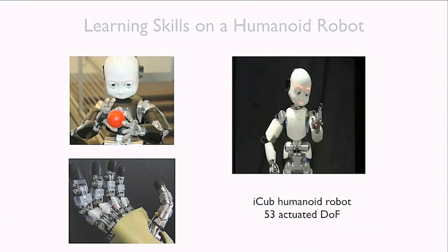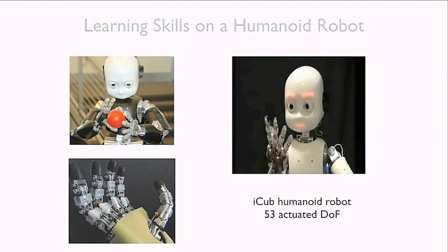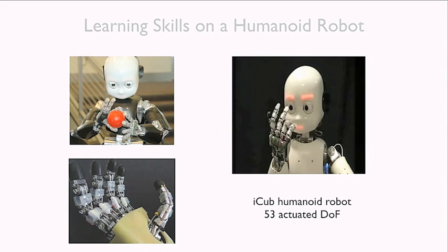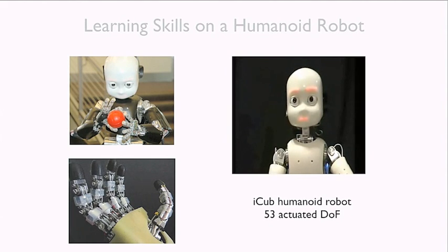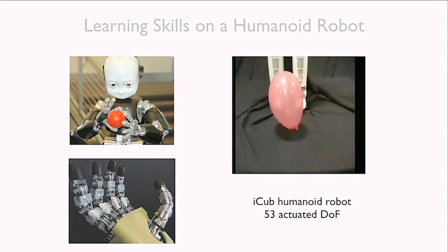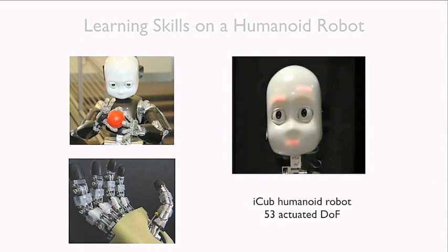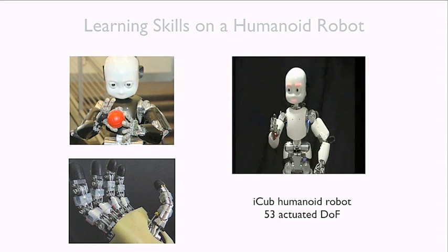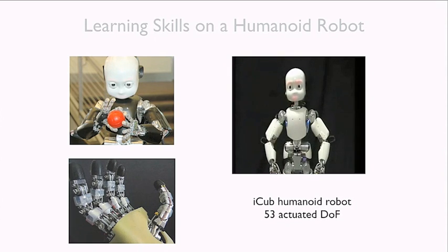One of the first applications of this technique was on a humanoid robot called the iCub — built to have roughly the dimensions of a three-year-old child, with around 53 degrees of freedom controlling fingers, eyes, torso, and everything. It's a pretty sophisticated but also fragile robot. Unlike typical machine learning experiments, you can't just run 10,000 training episodes on it — it's going to break.